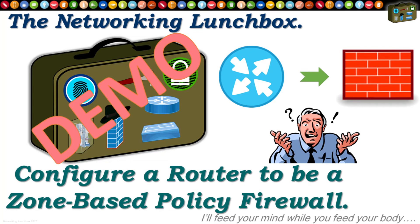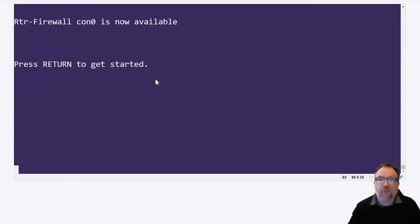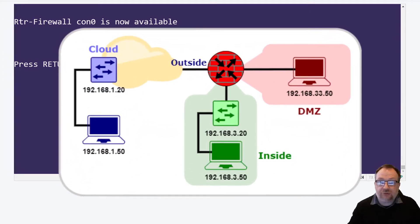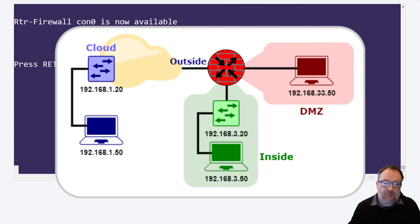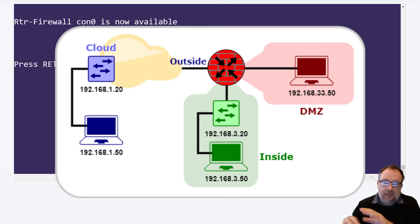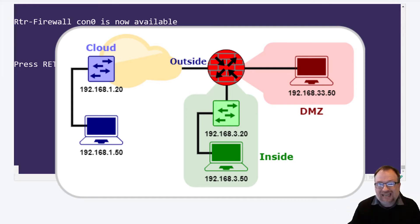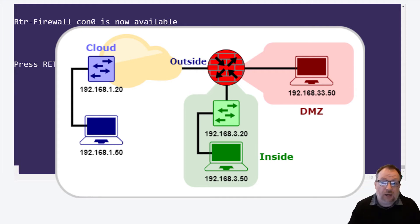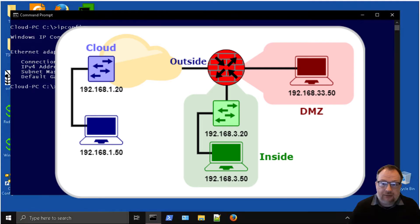Hello everybody and welcome. Today we are going to be looking at how we can set up a router to become a full-blown firewall. We're going to look at setting up a zone-based policy firewall on an actual Cisco router. As you can see from the topology diagram, we've already gone ahead and programmed up the cloud PC, cloud switch, inside PC, inside switch, DMZ PC, and all the routers and switches in between to build up the infrastructure. The only thing we're going to focus on today is programming up the router to be a firewall.